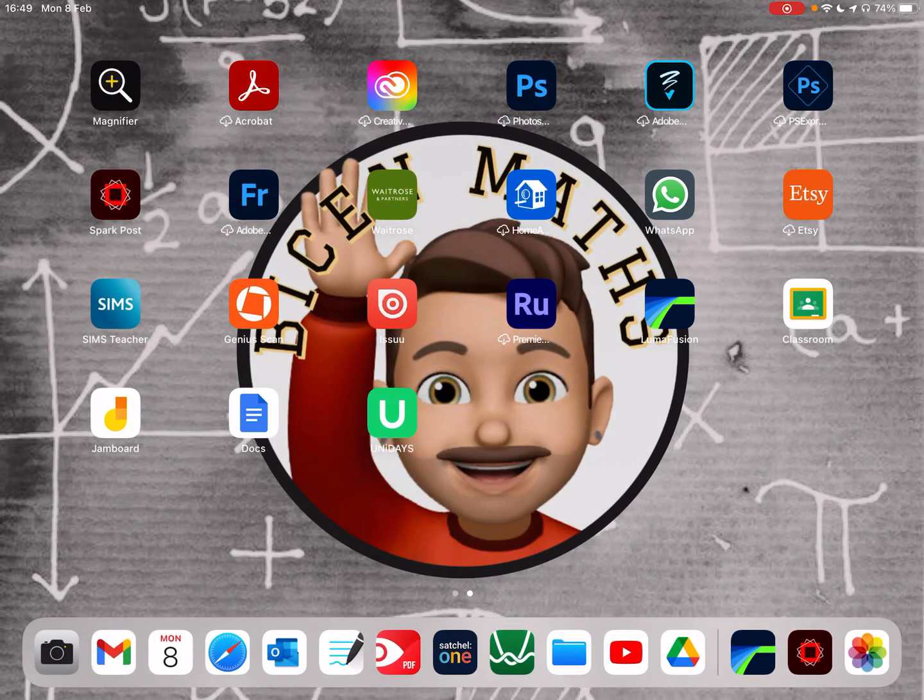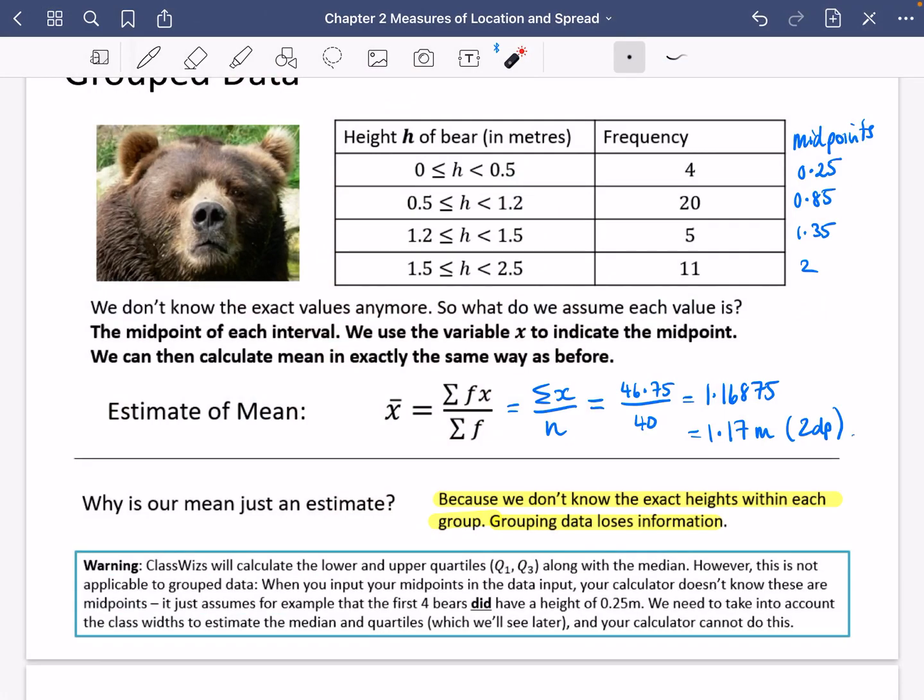However, there's a warning about this. There's a warning about this because it is not applicable to grouped data. When you input your midpoints in the data input, your calculator doesn't know that these are midpoints. It just assumes, for example, that the first four bears did have a height of 0.25.